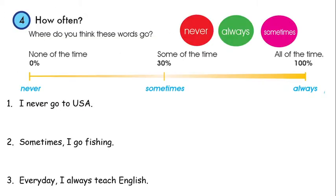Let's see some examples to help you understand better. Example number one: I never go to the USA. I never go to the USA. Example number two: I sometimes go fishing. Sometimes I go fishing — it means you don't always go, you just go fishing sometimes.